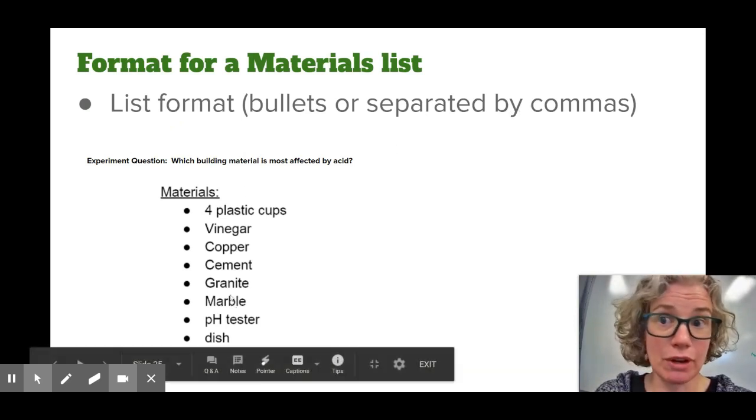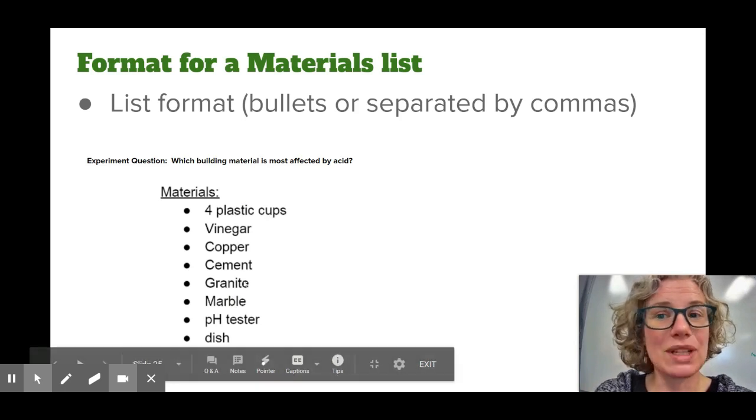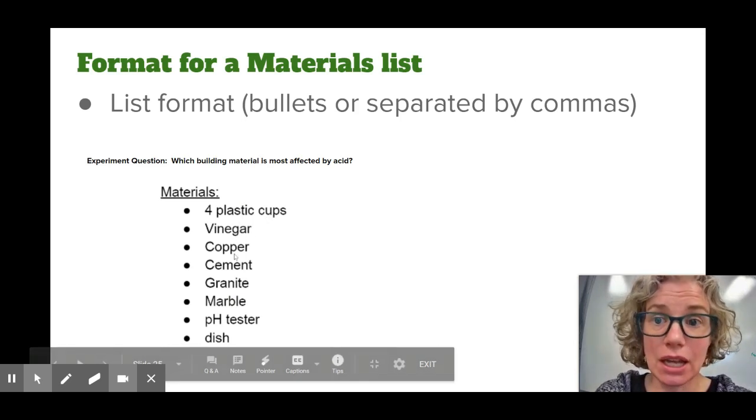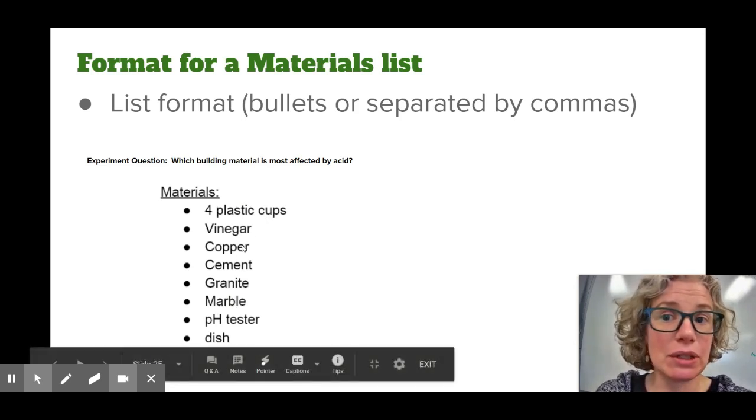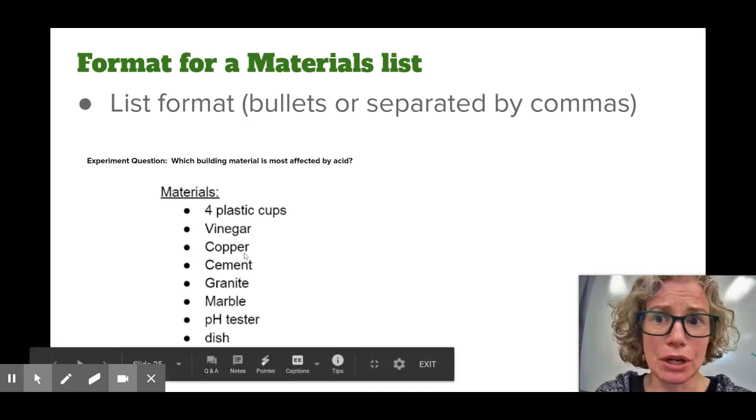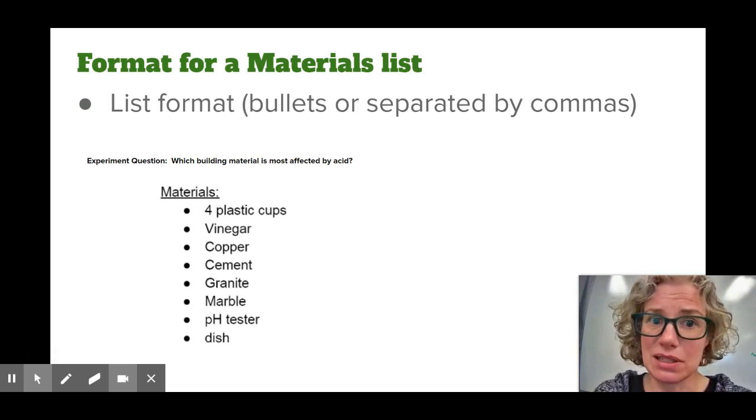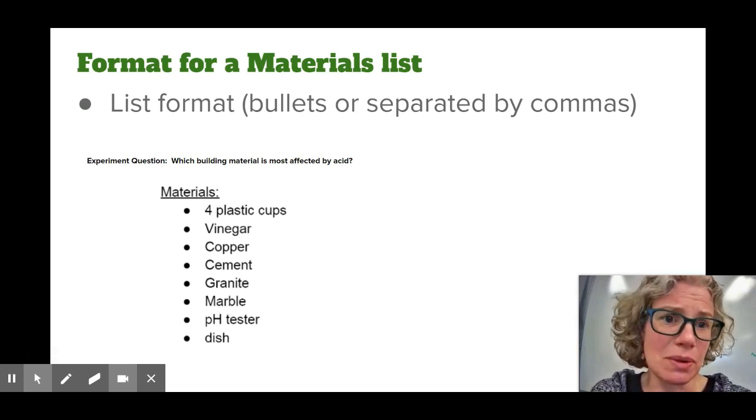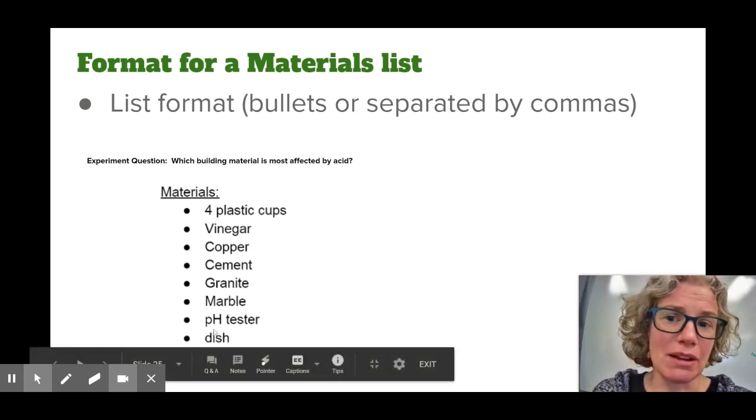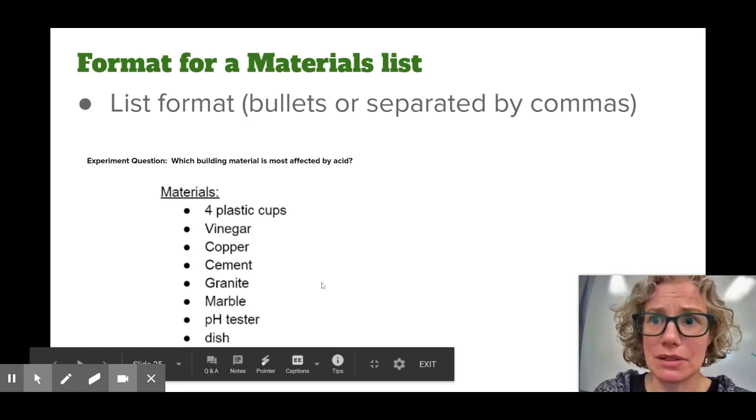Here is an example from one of my students. What's not ideal about this is they did not say how much vinegar they need and they didn't give you even rough sizes of how much or how big these pieces of copper and cement or granite should be. It would be nice if they said pieces less than two inches in size or something like that. Also they could have been a little bit more specific with what they mean by dish. And of course just grammatical things like the D in dish should be capitalized.